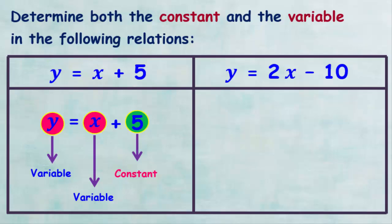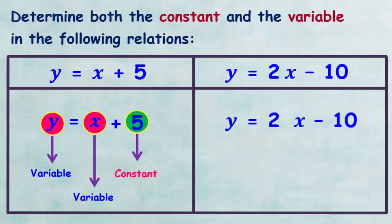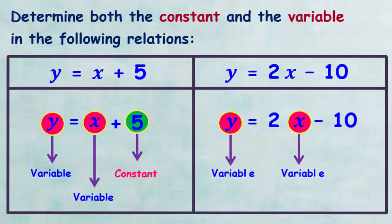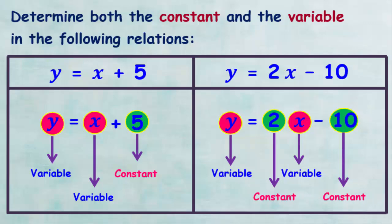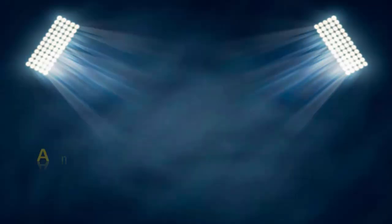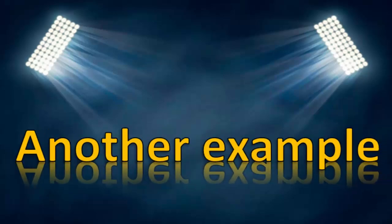As for the second mathematical relationship, Y equals 2X minus 10, we notice that in this relation there are two variables, Y and X, and there are two constants: the numbers 2 and 10. Now let's see another example of how to create a mathematical relation.